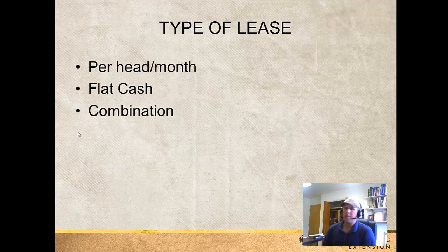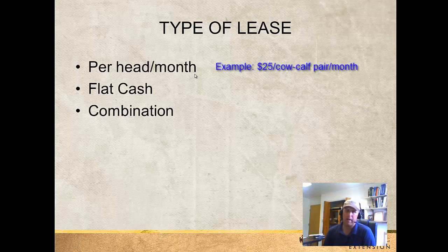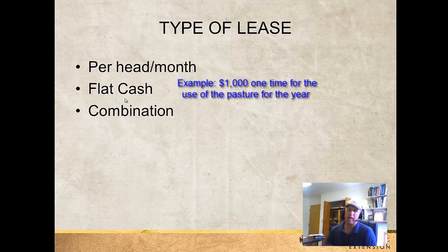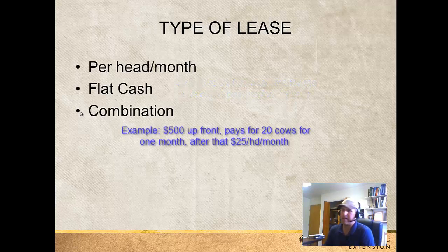The first thing to consider is the type of lease agreement you're going to have. Probably the most common is the per head per month — or some other period of time — where you pay for every cow or other type of animal at a set rate per month. That's a pretty common lease agreement with some pluses and minuses. Another option is a flat cash lease agreement where you pay, say, $1,000 for the use of the pasture for the year, regardless of how many head you bring or for how long. Very simple, but again there are pluses and minuses.